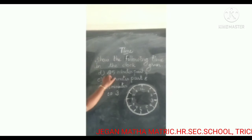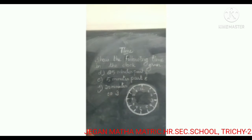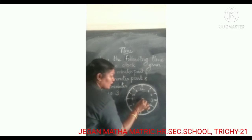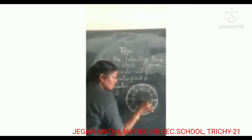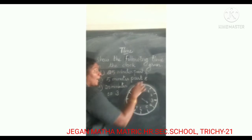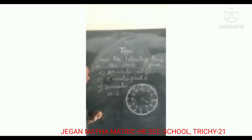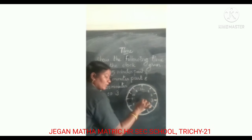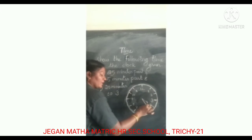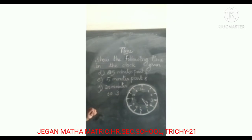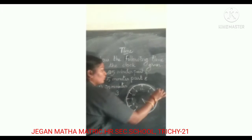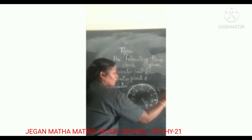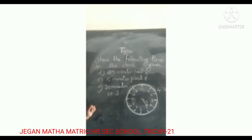Next one: twenty-five minutes past four. First draw the hour hand on four. And past twenty-five — five, ten, fifteen, twenty-five. Draw the minute hand on the five. So the time is four twenty-five.